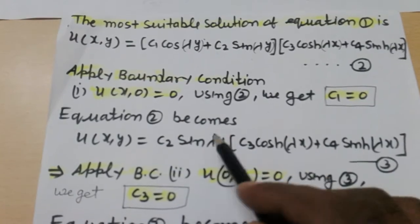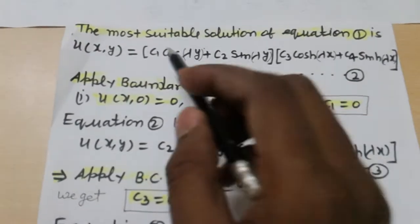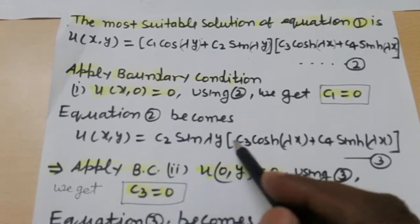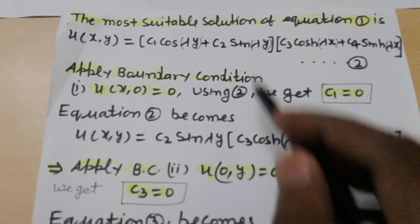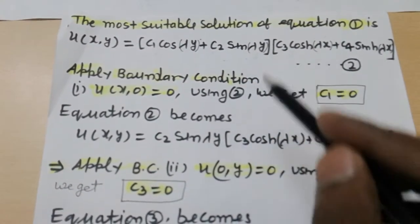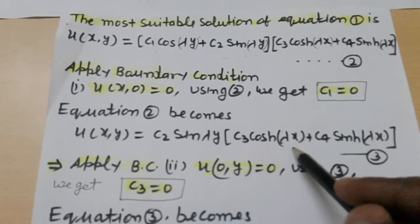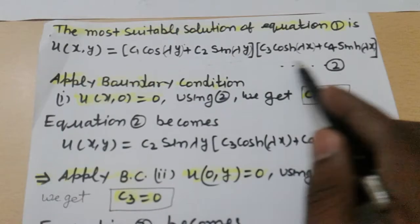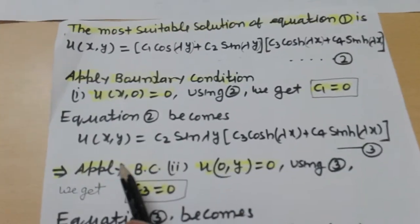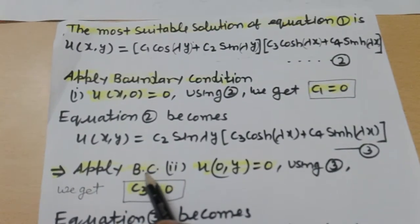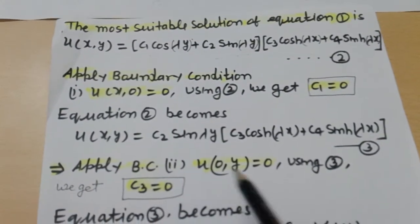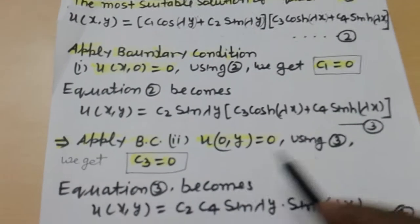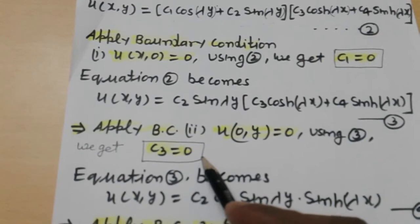Equation 2 becomes: putting the value c1 = 0, we get u(x,y) = c2 sin λy · (c3 cosh λx + c4 sinh λx). Next, applying the second boundary condition u(0,y) = 0 in equation 3, we get c3 = 0.